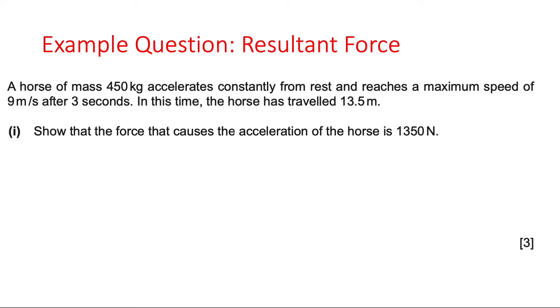We're asked here to show that the force on this horse is 1350 newtons. Now you notice in the question we're told the mass, we're told the maximum speed, we're told some time and we're told a distance. So we're not actually told all of the things that we might think we need for a straightforward F equals ma question. And that's why this one is a three marker.